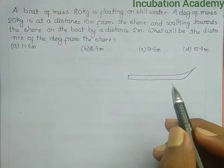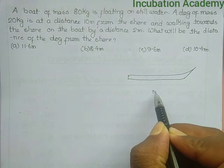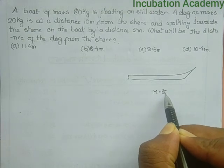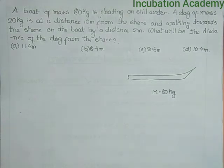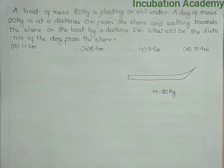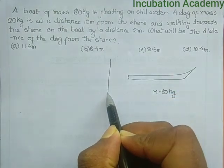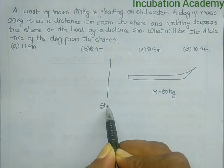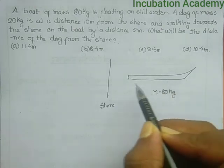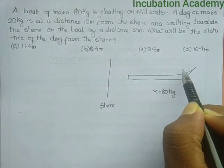A dog of mass 20 kg is at a distance 10 meters from the shore. So let us consider this is the shore line, and from the shore line, the dog is on the boat at a distance 10 meters from the shore.